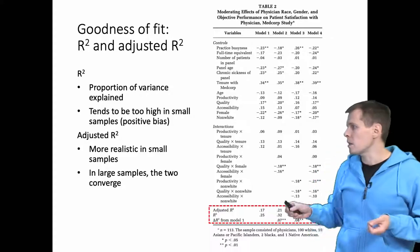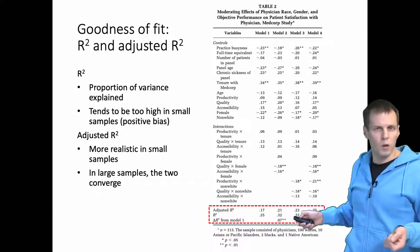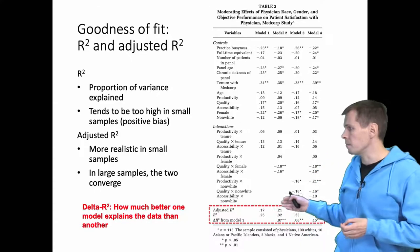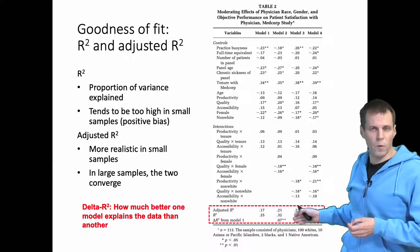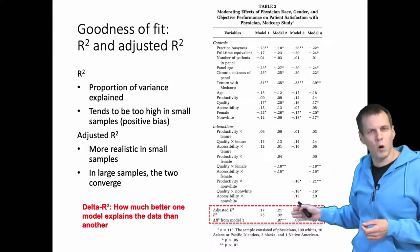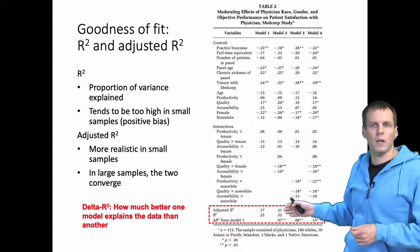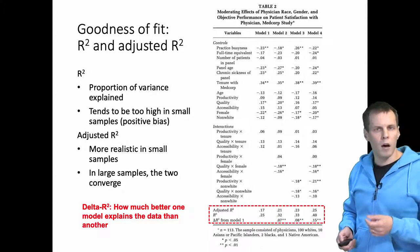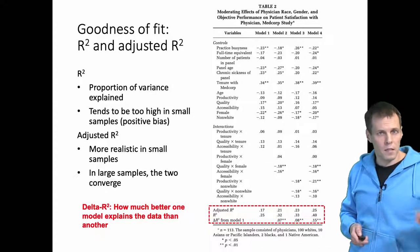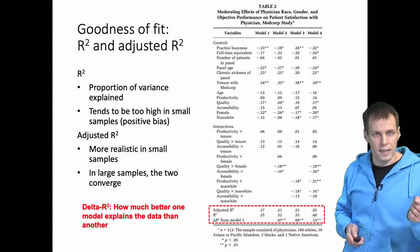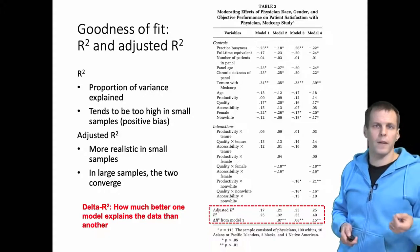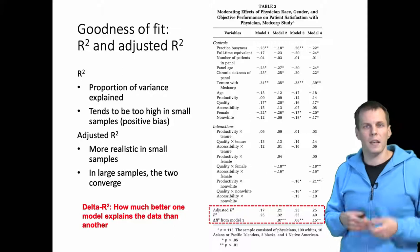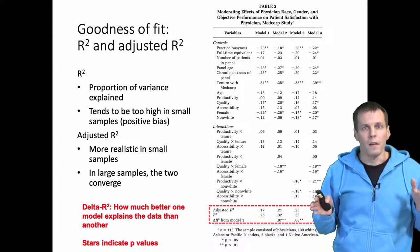We also have something used for model comparisons: the delta R-squared, which shows how much better the second model explains the data than the first, how much better the third explains than the first, and so on. The stars here are significance tests for the delta R-squared being exactly zero. Statistically significantly different results from zero mean that model two, model three, and model four explain the data statistically significantly better than the first model.